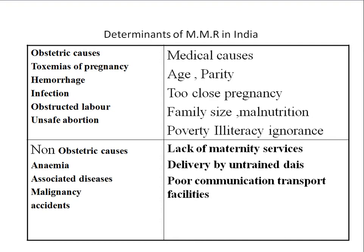Anemia leads to hemorrhage risk. The multi-purpose health worker female, by registering the antenatal mother and giving iron folic acid tablets during health checkups, can prevent anemia. Worm infestation and malaria are the two main causes of anemia in antenatal mothers and must be controlled through proper antenatal care.